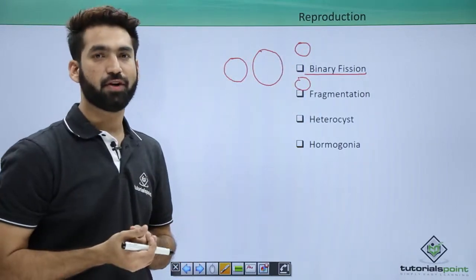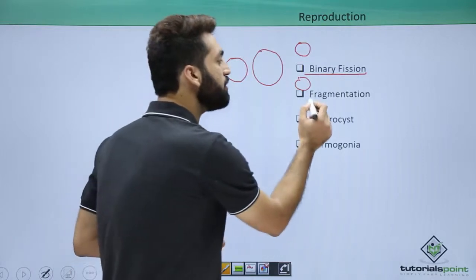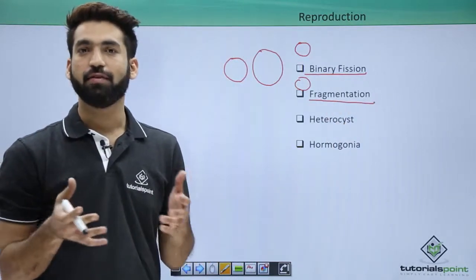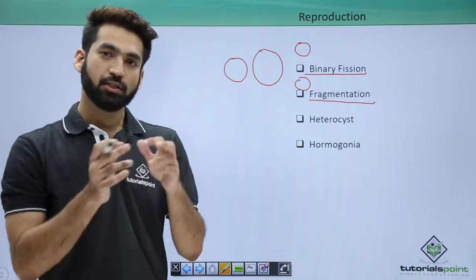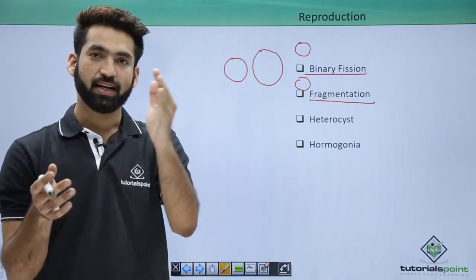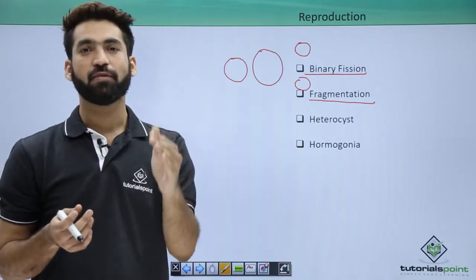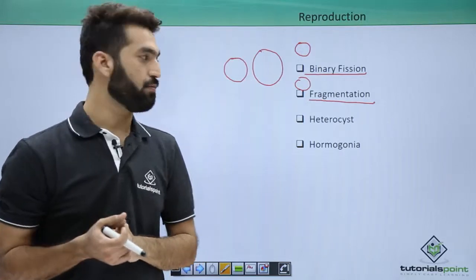This is the binary fission we've already discussed. For fragmentation, filamentous cyanobacteria break down into fragments, and each fragment synthesizes a new cyanobacteria.